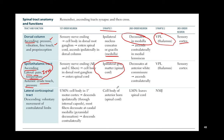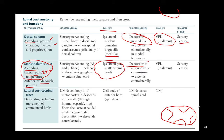For the spinothalamic tract: pain, itch, and temperature sensation comes in, synapses in the posterior horn, and immediately crosses over at that level. It then enters the lateral tract and starts ascending to the thalamus. This immediate decussation means any lesion upstream causes a contralateral deficit.